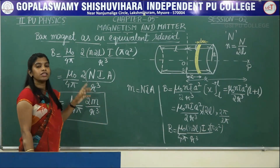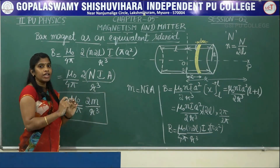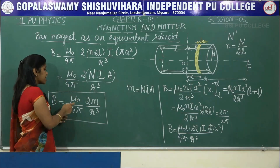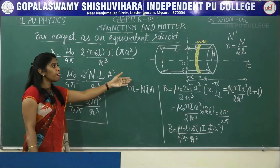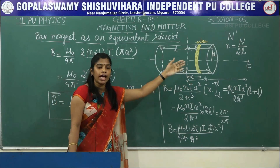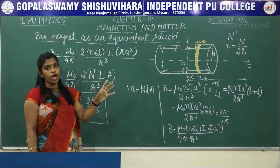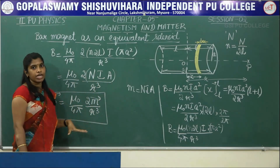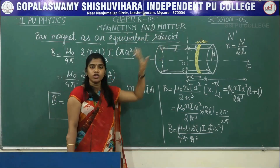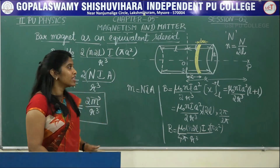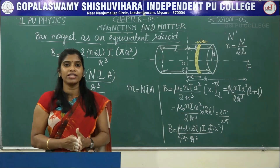While explaining the dipole analogy, I showed that the axial field of a magnetic dipole is μ₀/(4π) · 2M/R³. And even in the case of a solenoid, the magnetic field on the axial line is μ₀/(4π) · 2M/R³. The bar magnet and the solenoid produce the same magnetic field; therefore we can conclude the bar magnet is equivalent to a solenoid. In this session we have discussed that a bar magnet is equivalent to a solenoid. Thank you.